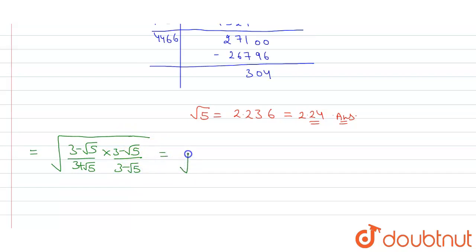Now square root of 3 minus root 5 the whole square upon. Now as we can see this is a plus b into a minus b identity. And we know a plus b into a minus b is a square minus b square. So this will be 3 square is 9 minus root 5 square is 5.